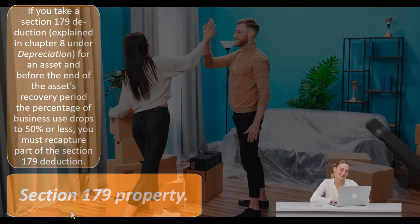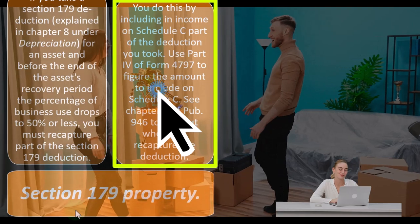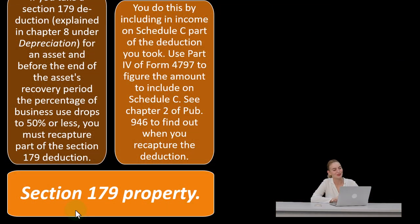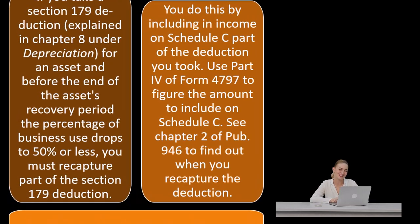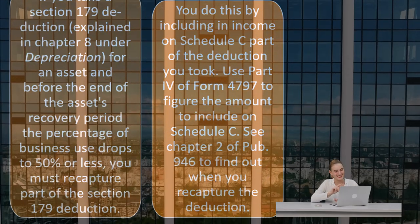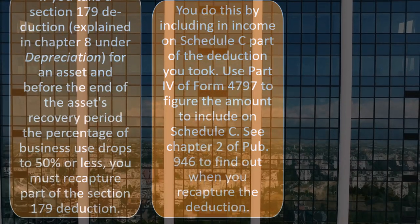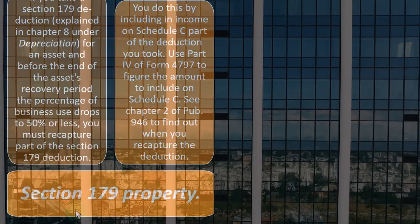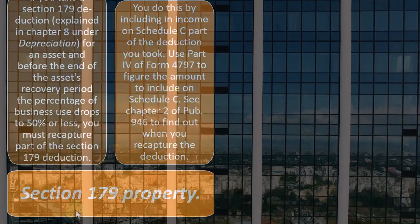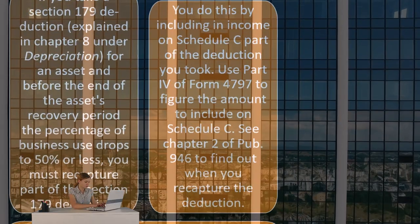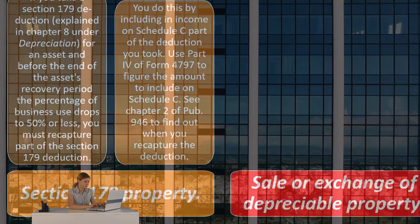The problem is that you received an accelerated deduction in year one, but now the property is partly personal — so you must recapture it by including part of the deduction back in income on Schedule C. Use Part 4 of Form 4797 to figure the amount to include. See Chapter 2 of Publication 946 to find out when you recapture the deduction.